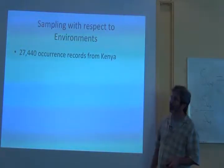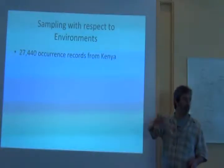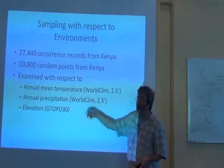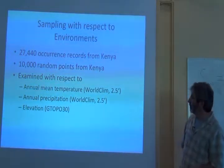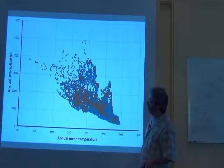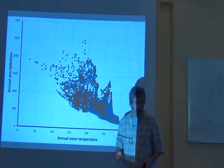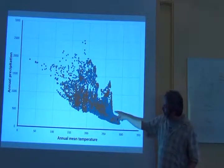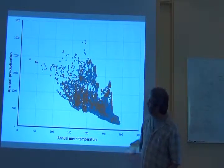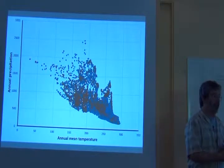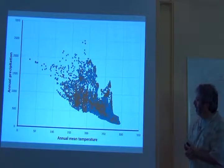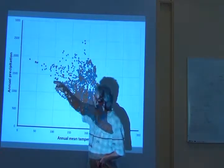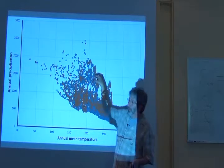I had 27,440 occurrence records after all of this reduction process, and my 10,000 random points. I just looked at three dimensions of the environment, and I can produce plots like this pretty easily. The brown spots are where we have bird records, and the blue — which is behind the brown — wherever you see blue showing through, those are sets of environments where no bird records come from.